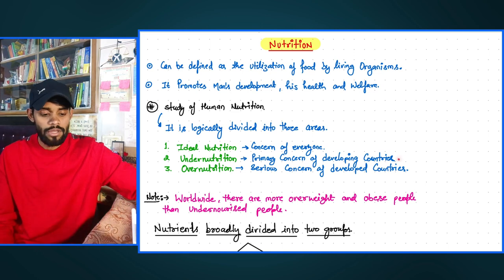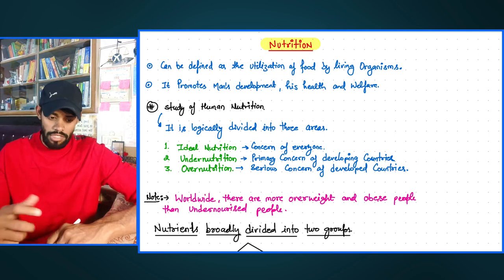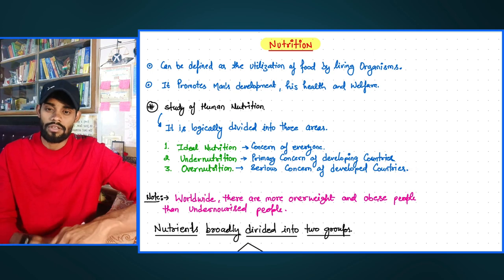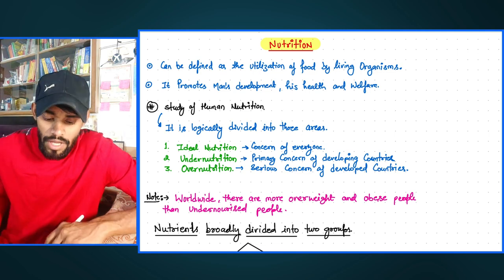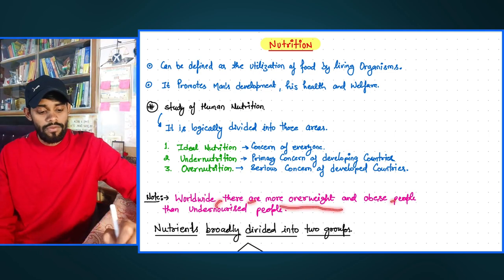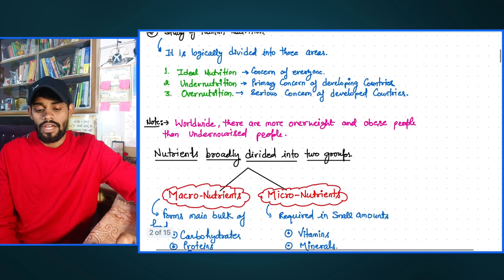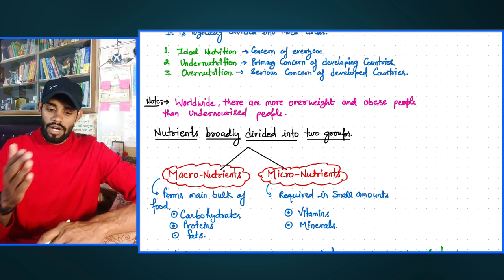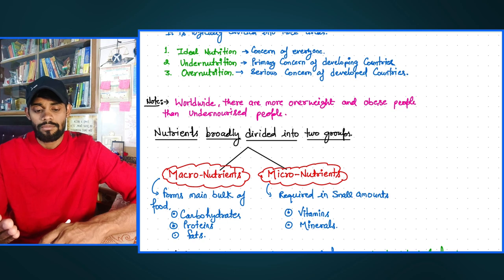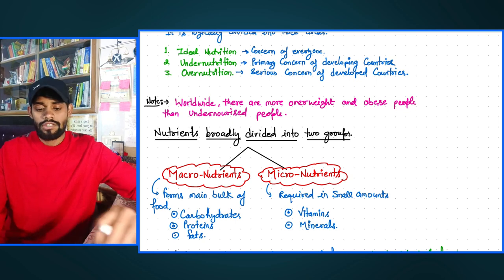Developing countries face the concern of under-nutrition, while developed countries face a serious concern of over-nutrition, because there, even after having a proper amount of nutrition, extra things are consumed. As noted, worldwide there are more overweight and obese people than undernourished people — meaning the quantity of overweight people is much greater in comparison to those who don't get proper diet and food on time.